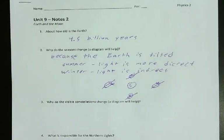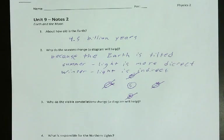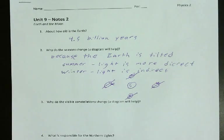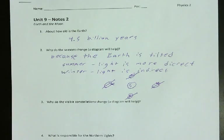So we're kind of in the middle in spring and fall, which is why the weather is mild. We're direct in the summer, which is why it gets hot, and indirect in the winter. We're actually closest to the sun in the winter. I want to make sure you understand it has nothing to do with being close or far from the sun — nothing to do with that.